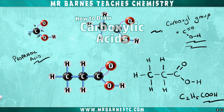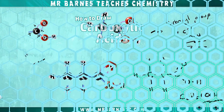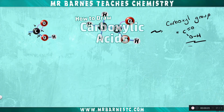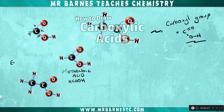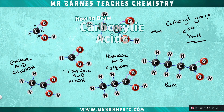This pattern is exactly the same for each of the four acids. So methanoic acid looks like this, ethanoic acid looks like this, and butanoic acid looks like this.